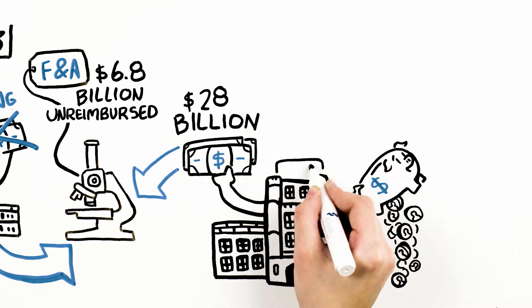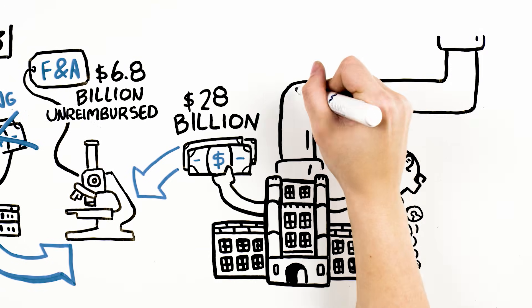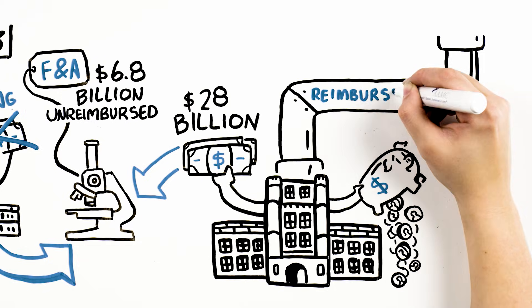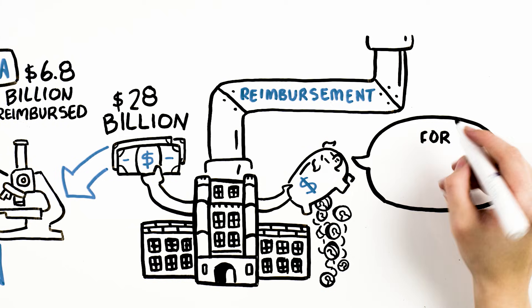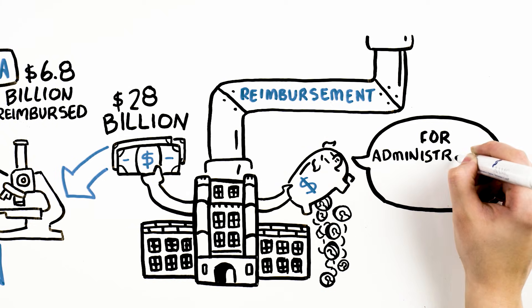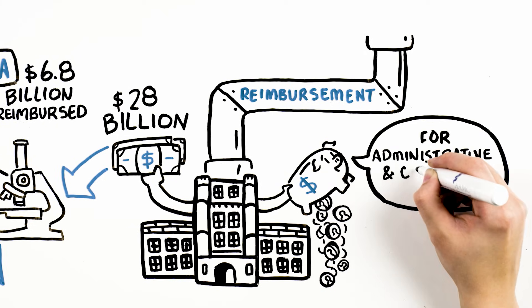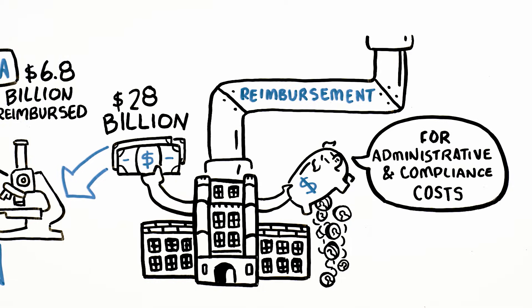Universities are making up the difference between the full costs of conducting federal research and what the government pays. In fact, unlike other research performers that are fully reimbursed for these costs, universities are strictly limited in the amount they can recover from the federal government to pay for administrative and compliance costs